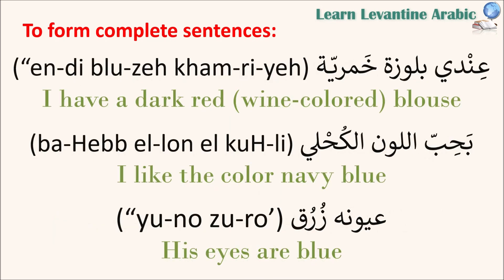More simple complete sentences. عندي بلوزة خمرية — I have a dark red or wine-colored blouse. عندي means I have, بلوزة means blouse, and خمرية means dark red or wine-colored. خمر means wine, so خمرية means wine-colored.